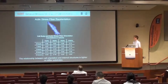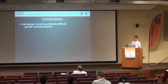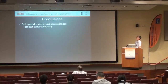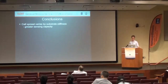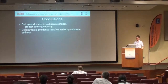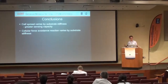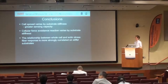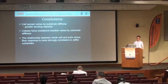The relationship between cell orientation and internal actin structures is tied to stiffer substrates. Overarching conclusions: cell spreading varies by substrate stiffness, giving cells a greater capacity to sense mechanical strain. The cellular force-avoidance reaction varied by substrate stiffness in accordance with our hypothesis. There was a relationship between whole-cell orientation and actin stress fiber orientation, and it was more strongly correlated on the stiffer substrates.